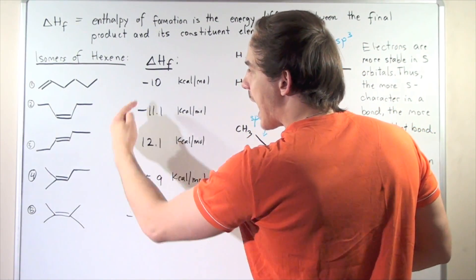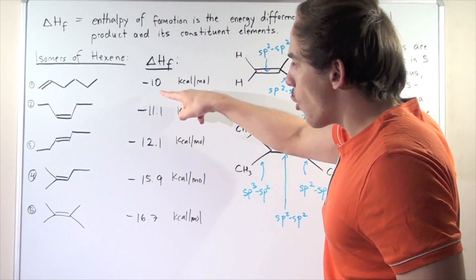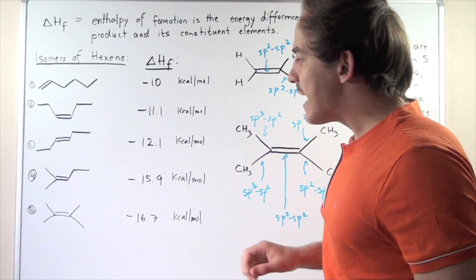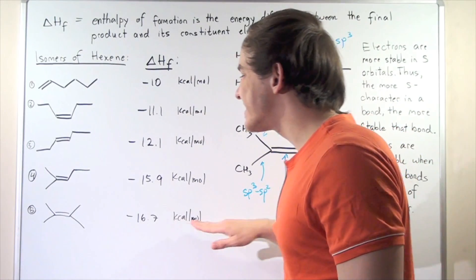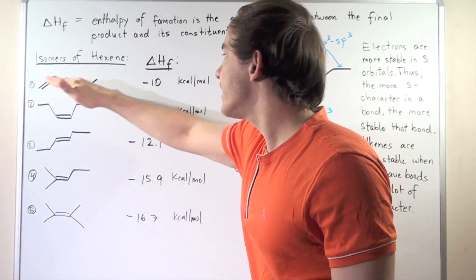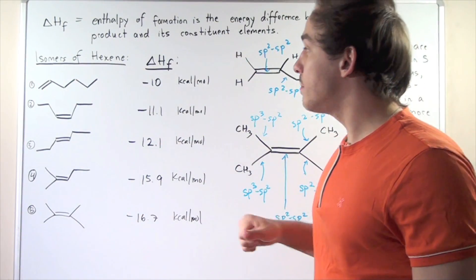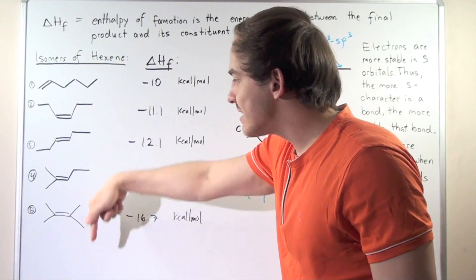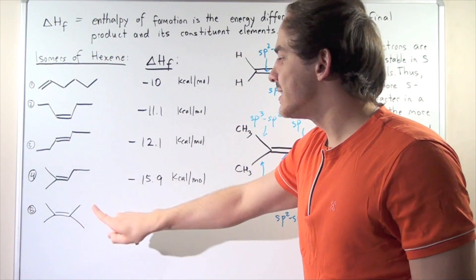And we see that as we go from one to five, our values become more and more negative. And five is the most stable isomer and one is the least stable isomer. So stability increases as we go down from one to five.